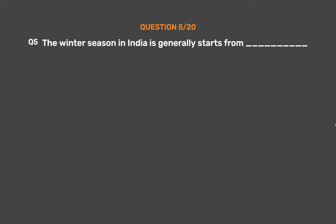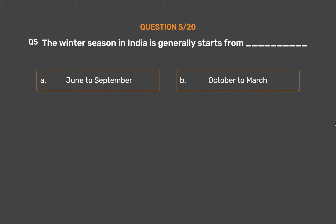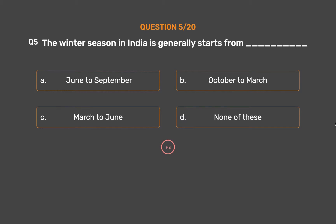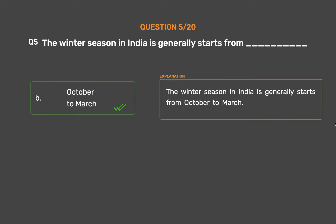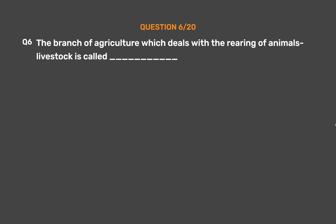Question No. 5: The winter season in India generally starts from ___. The correct answer is October to March.